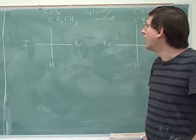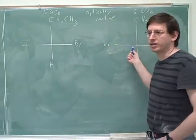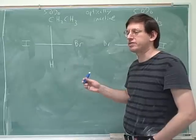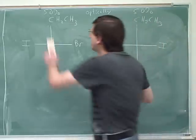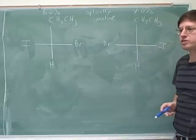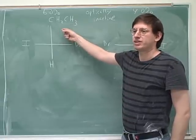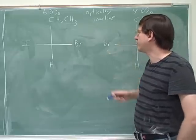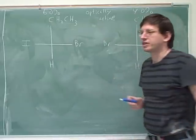What if it was 60-40? Is this a chiral molecule? Yes. And is this a chiral molecule? Yes. But is this an optically active solution? No — wait, actually yes, it would be, because only 40% of these would be canceled. Because there's an imbalance, this would be optically active. We have two chiral molecules and they don't totally cancel each other out because there's more of one than the other. So this would be an optically active solution.